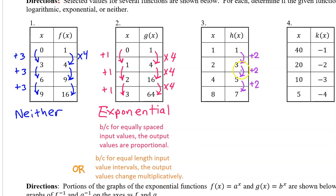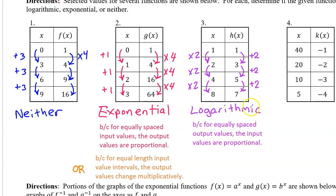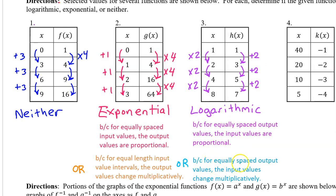For number three, the output values are equally spaced, so this might be logarithmic. We just need to check if the input values change multiplicatively — divide each input value by the previous input value to see if we get a common ratio. The first ratio is 2 (2 divided by 1), 4 divided by 2 is also 2, and 8 divided by 4 is 2 again. This shows that h of x is logarithmic — because for equally spaced output values, the input values change multiplicatively.